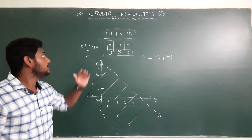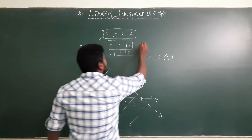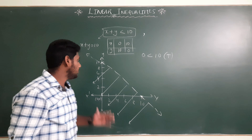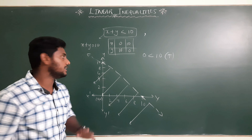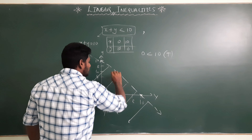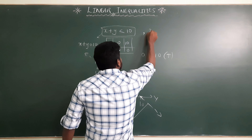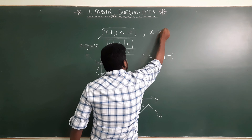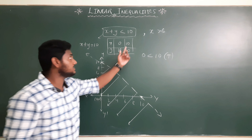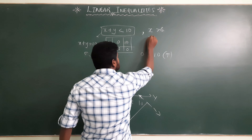Now in this class, if they give another extra line — for example, x is greater than 6 — then we have another inequality to consider. For x greater than 6, we first convert it to the equation x equal to 6.